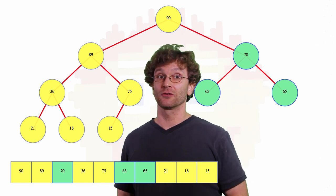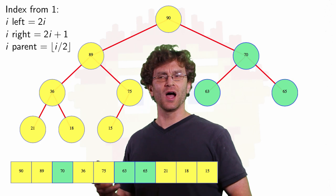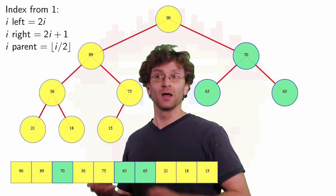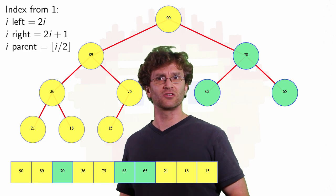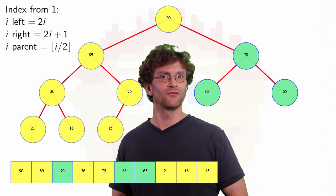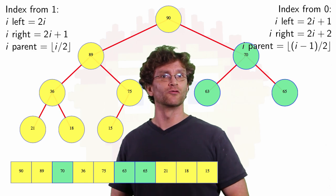If, for instance, we're indexing from 1, then the left child of index i is at 2i, and the right child is 1 past that, or the left child of 3 is at 6, the right child is at 7. If we're indexing from 0, we're going to be set off 1 from there.